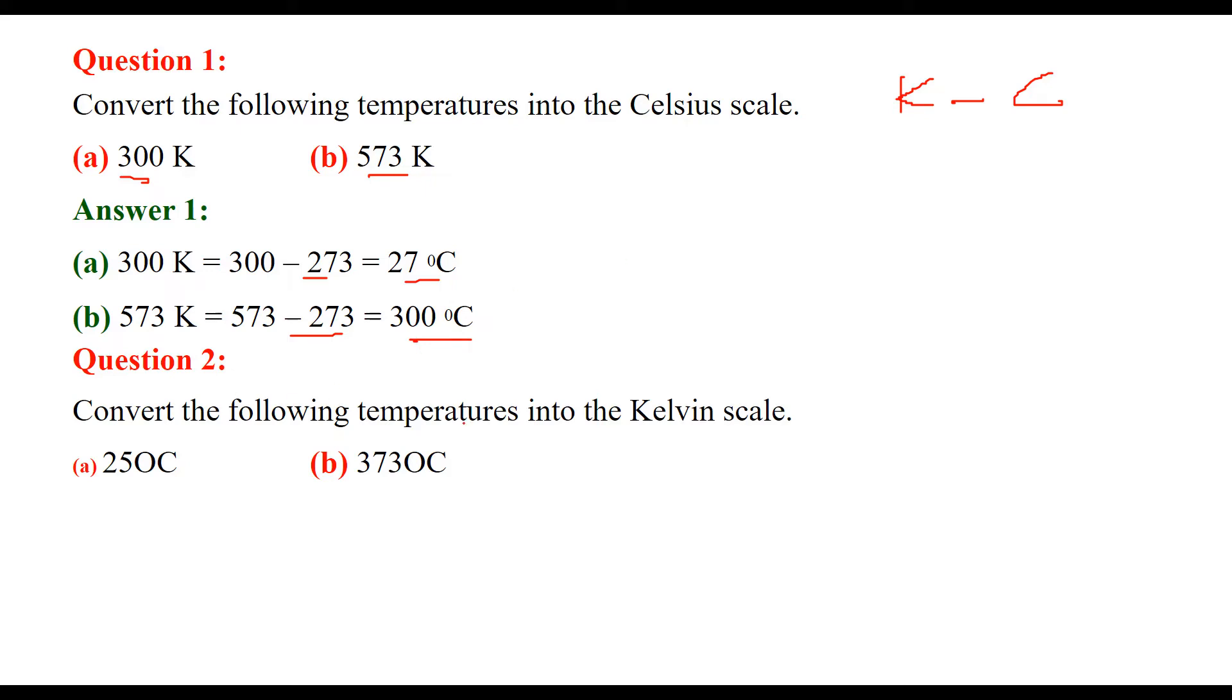Question 2: Convert the following temperatures into Kelvin scale. As we converted Kelvin to Celsius by subtracting 273, in this case we add 273 to convert to Kelvin scale. So 25 plus 273 is 298 Kelvin, and 373 plus 273 is 646 Kelvin.